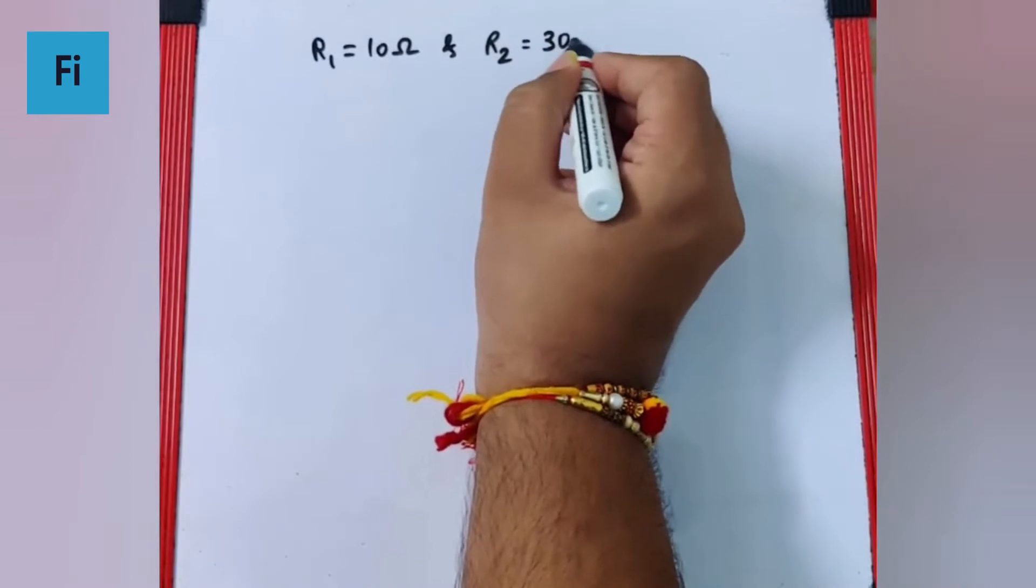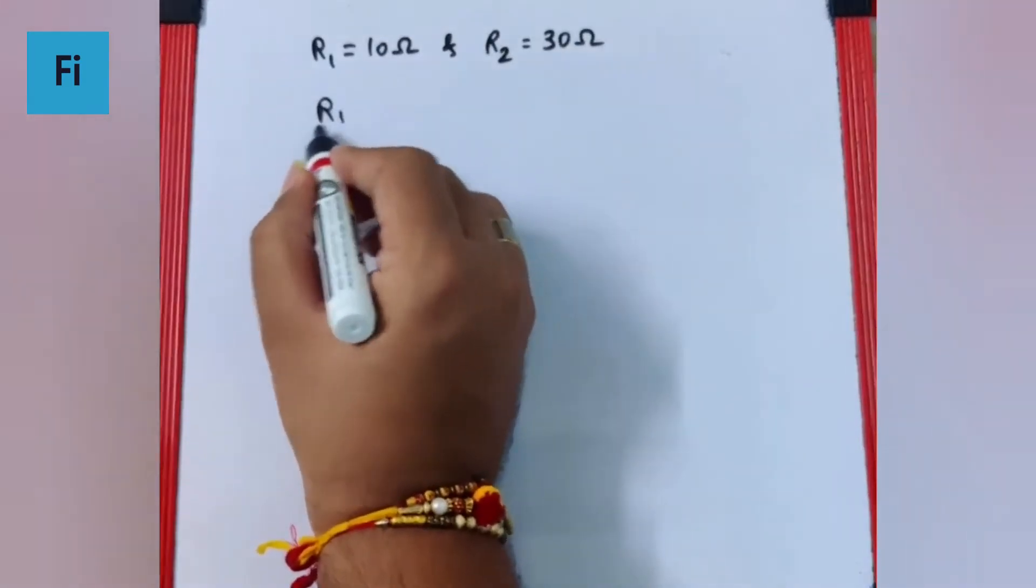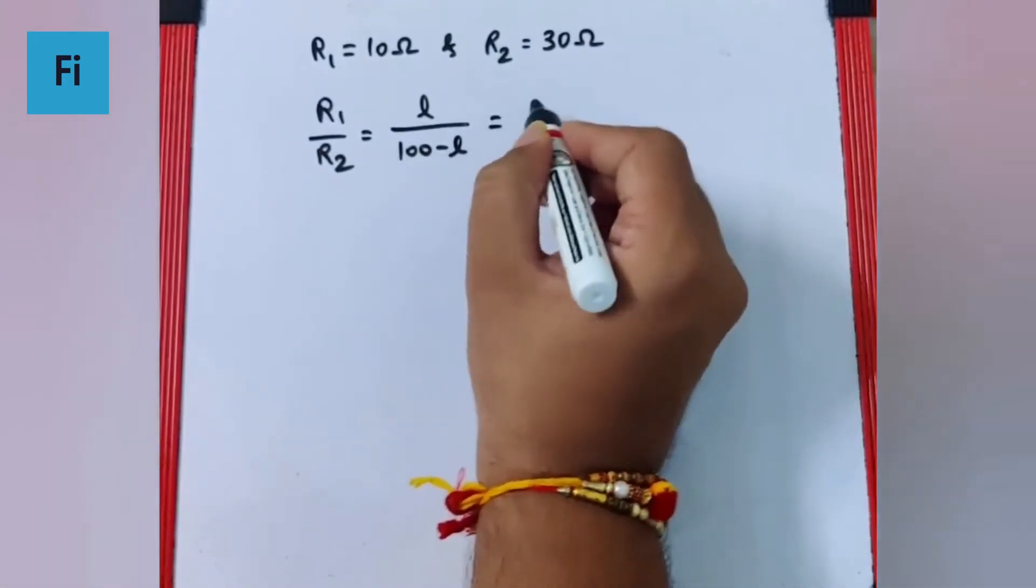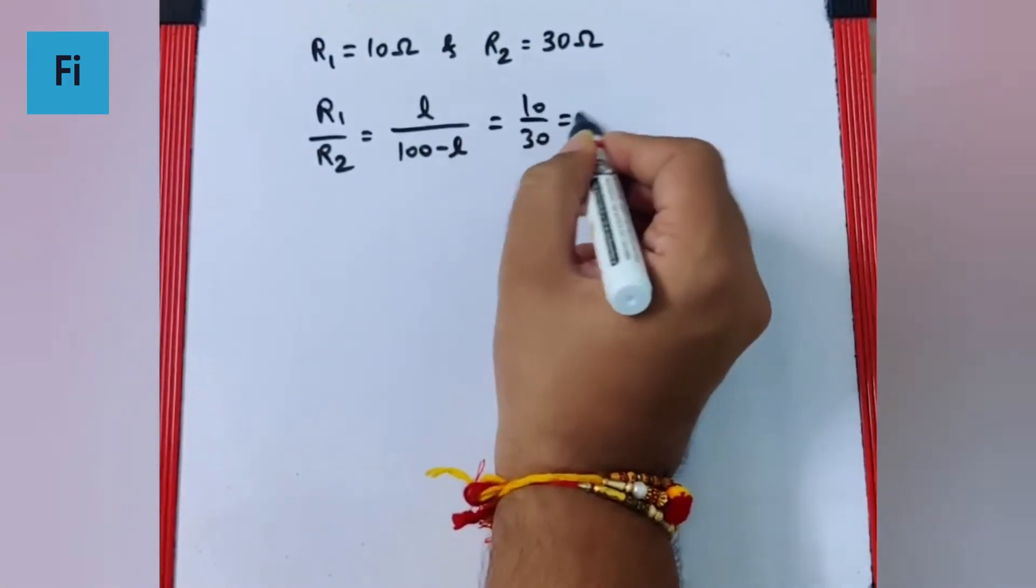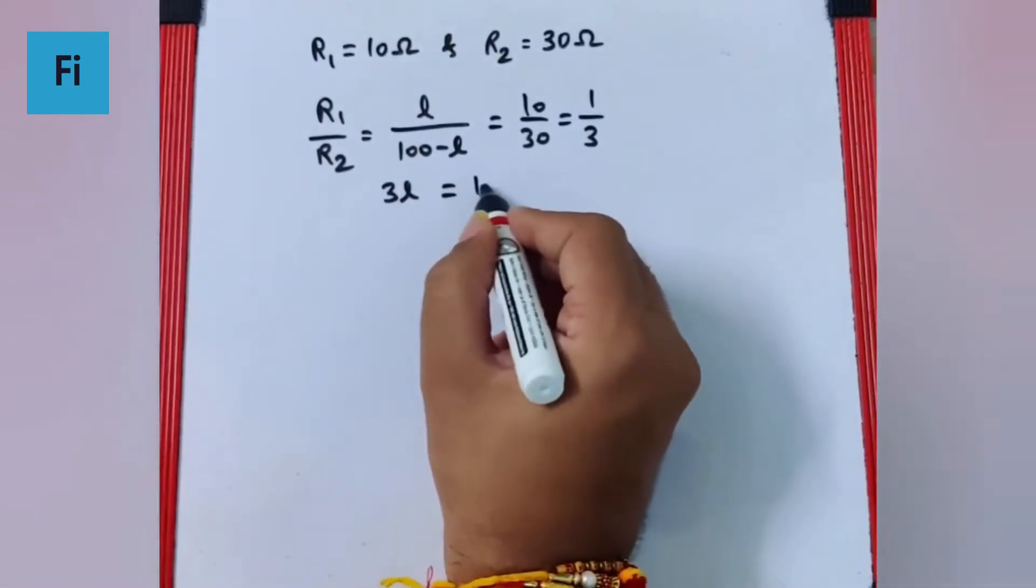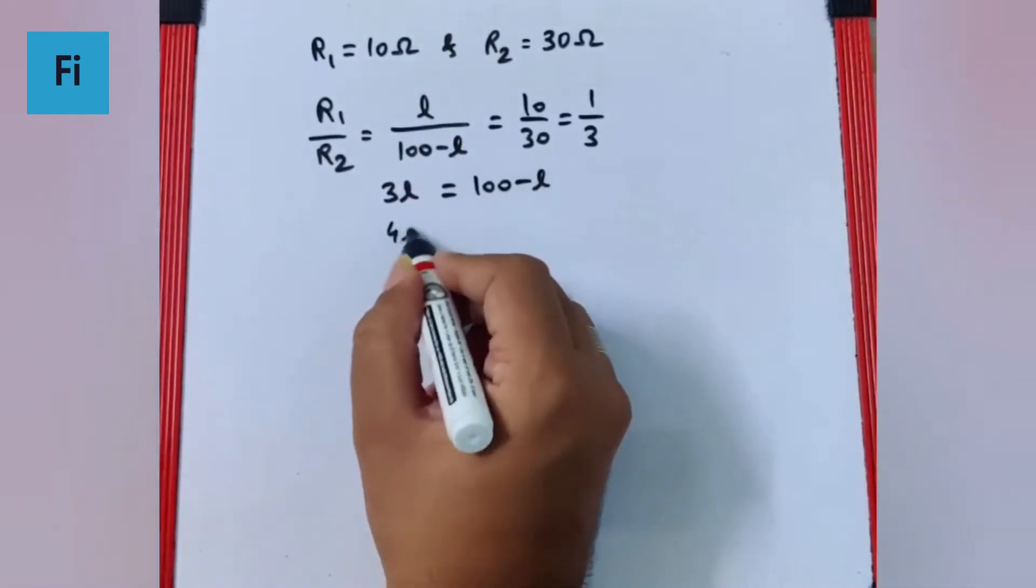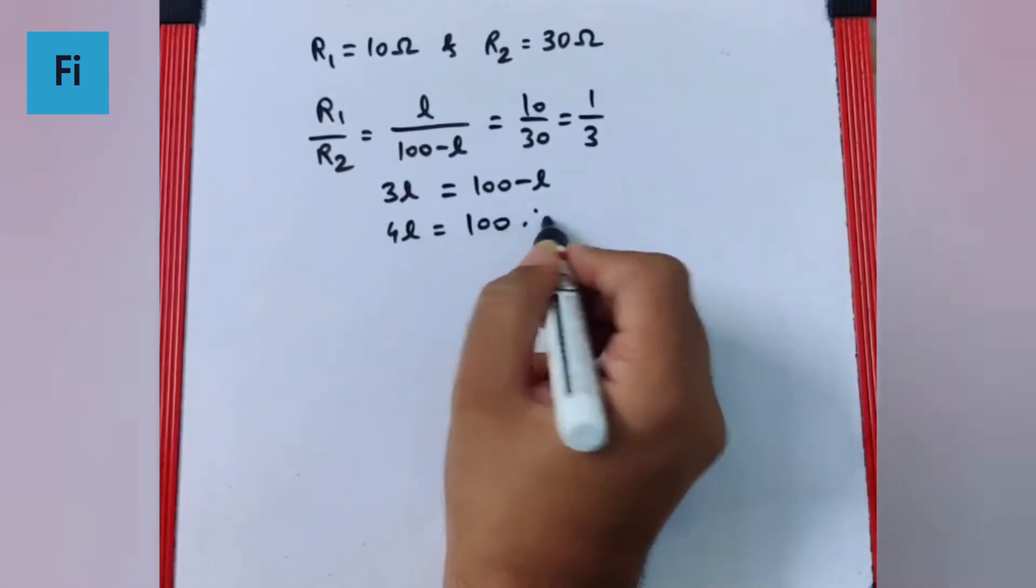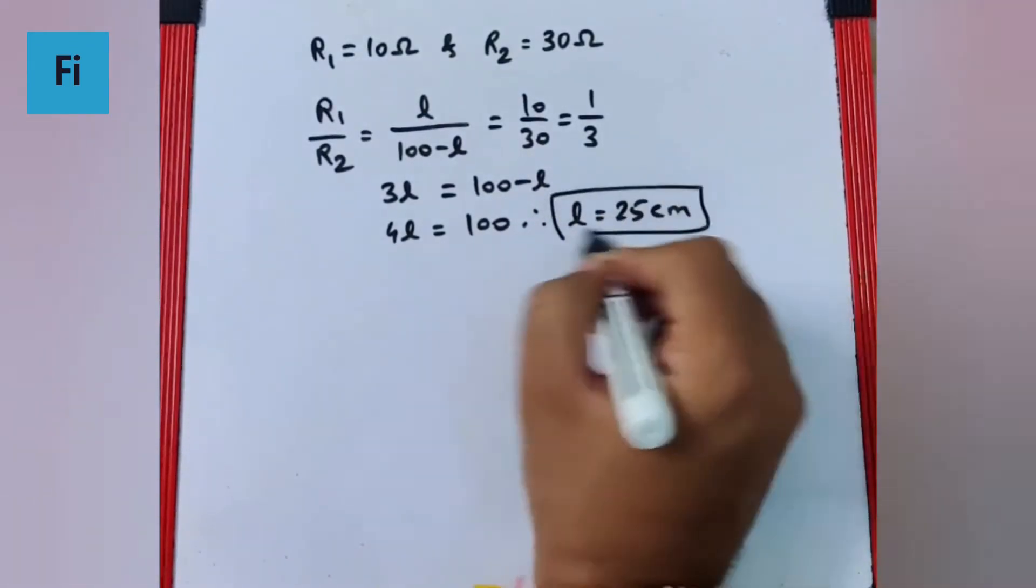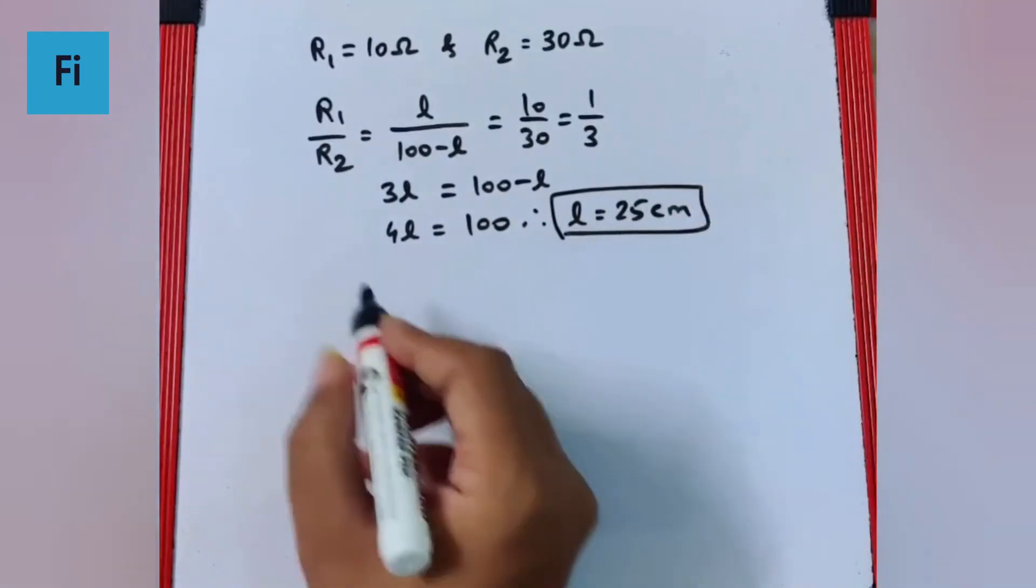First case: R1 by R2 is l upon 100 minus l, which is 10 by 30, which is 1 by 3. Cross multiply, so 3l equals 100 minus l. So 4l equals 100, that means l will be 25 centimeter. This is the first case.